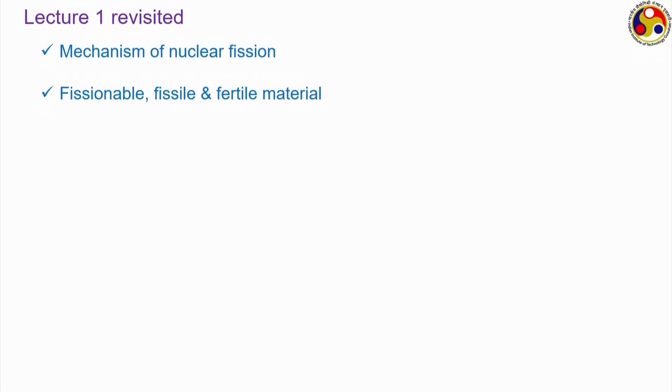You were introduced to the definitions of fissionable, fissile, and fertile materials. The term fissionable is associated with any nucleus which can be fissioned by striking it with either a thermal neutron or a fast neutron. The term fissile is used exclusively for nuclei which can undergo fission only after absorbing a thermal neutron and can also sustain a chain reaction. Fertile materials cannot be fissioned by a thermal neutron but can be converted to a fissile isotope. Uranium-235 (92U-235) is the only naturally occurring fissile isotope, but uranium-233 and plutonium-239 (94Pu-239) are also commonly used, though artificially produced.